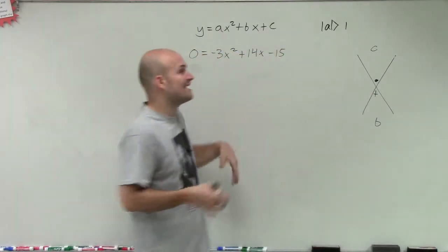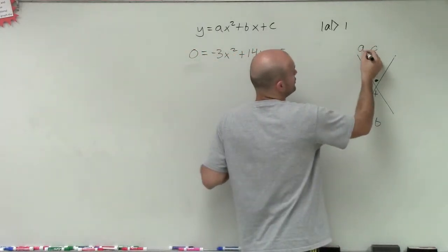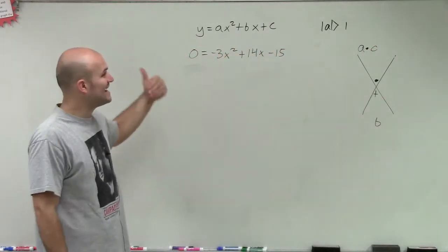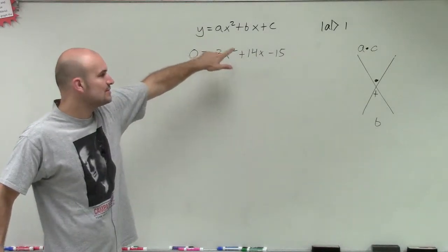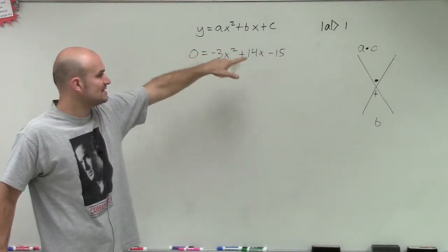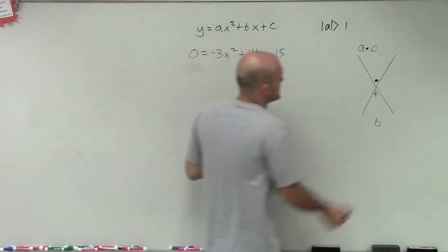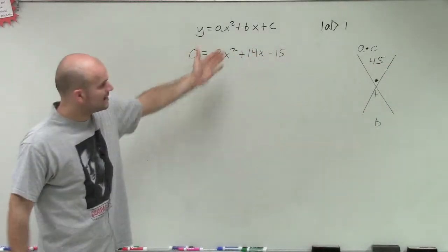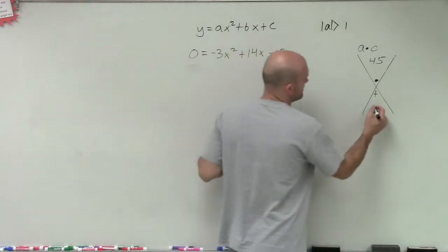However, when we have the absolute value of A is greater than 1, we have to include that value of A. So rather than having C up top, now it's going to be A times C. So let's do A times C. A is negative 3, C is negative 15. So negative 3 times negative 15 is a positive 45. Then we're going to take our values of B, which is positive 14.